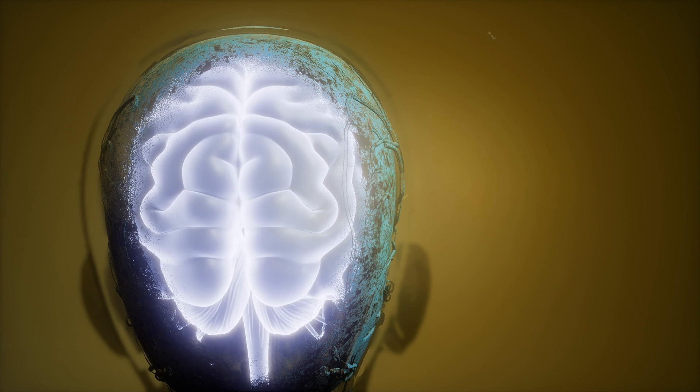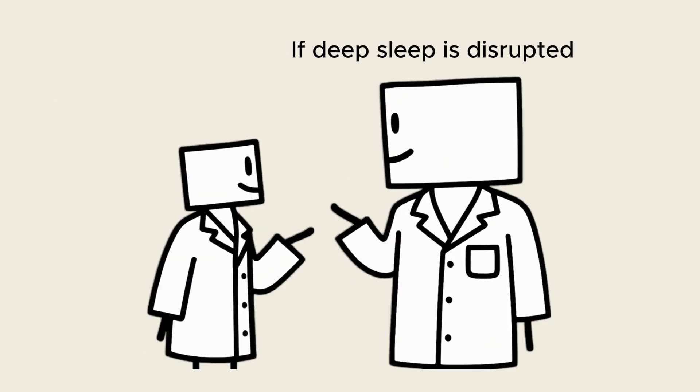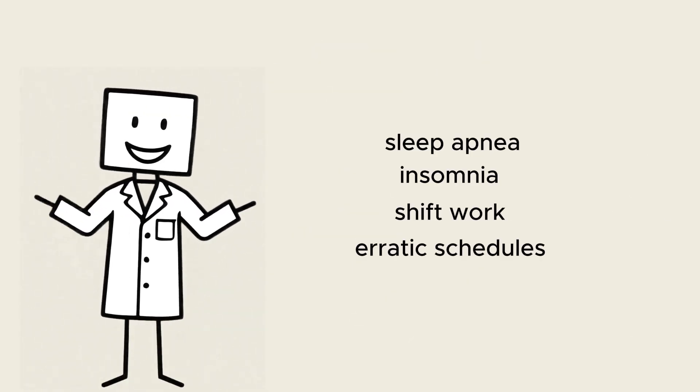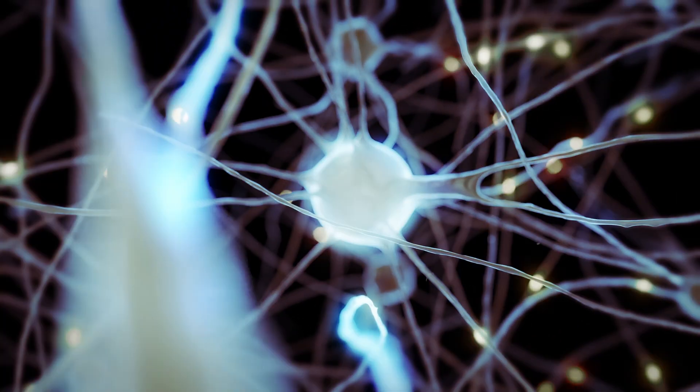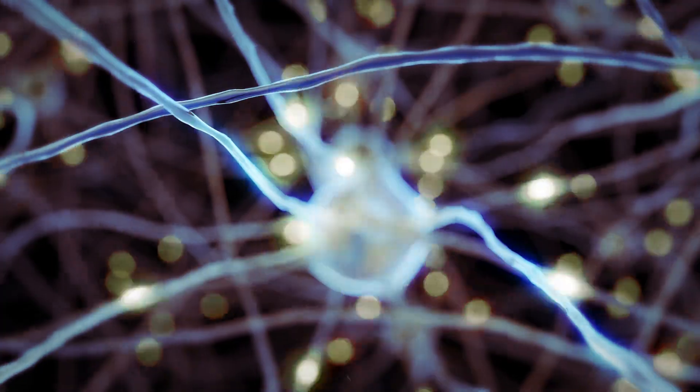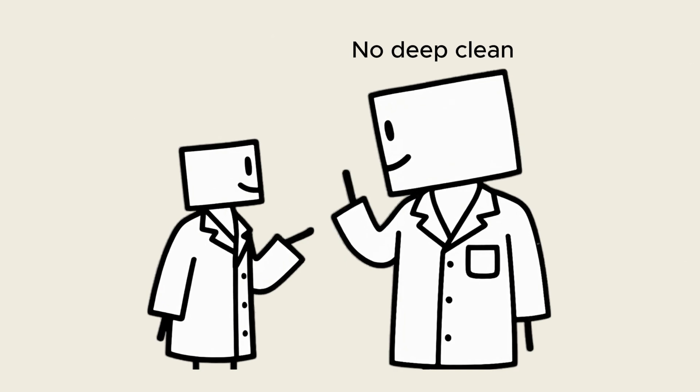If deep sleep is disrupted, by sleep apnea, insomnia, shift work, or erratic schedules, the glymphatic system cannot complete its nightly rinse. The interstitial spaces remain constricted, fluid movement slows, and toxins accumulate. No deep sleep, no deep clean. It's as simple and as profound as that.